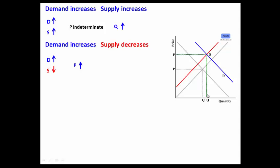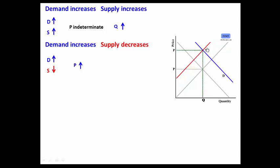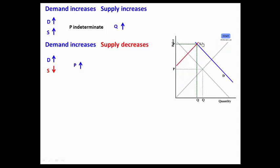Notice that the quantity went up in this situation. But if supply kept on shifting, it would remain the same, or it would go down. So we would say quantity is indeterminate.